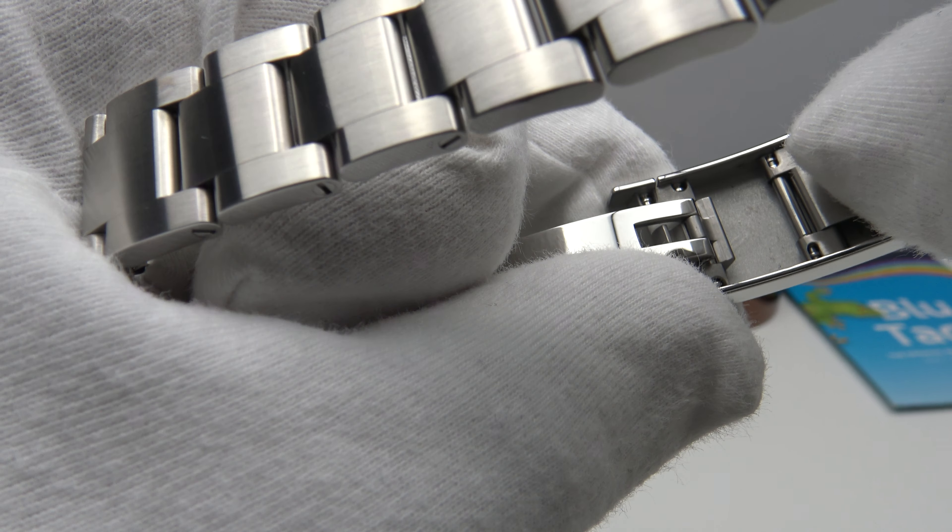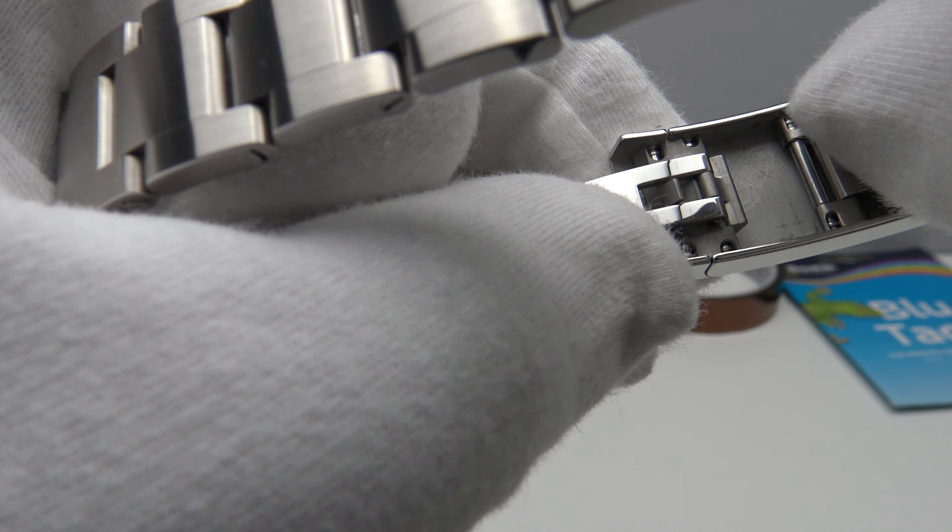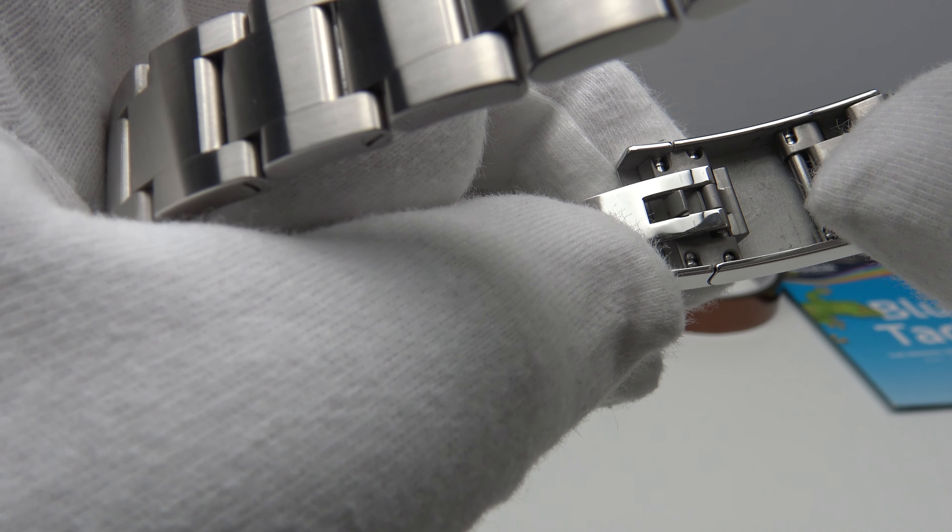And if one pops out the easy link extension, that then reveals the two slots for the spring bar inside the clasp as you can see.